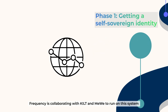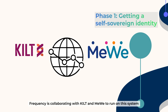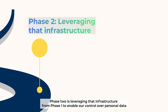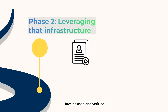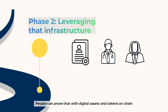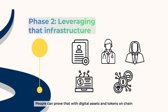With that being said, Frequency is collaborating with Qt and Miwi to run on this system. Phase 2 is leveraging that infrastructure from Phase 1 to enable our control over personal data — how it's used and verified. So whether you are a doctor or a lawyer, people can prove that with digital assets and tokens on-chain.